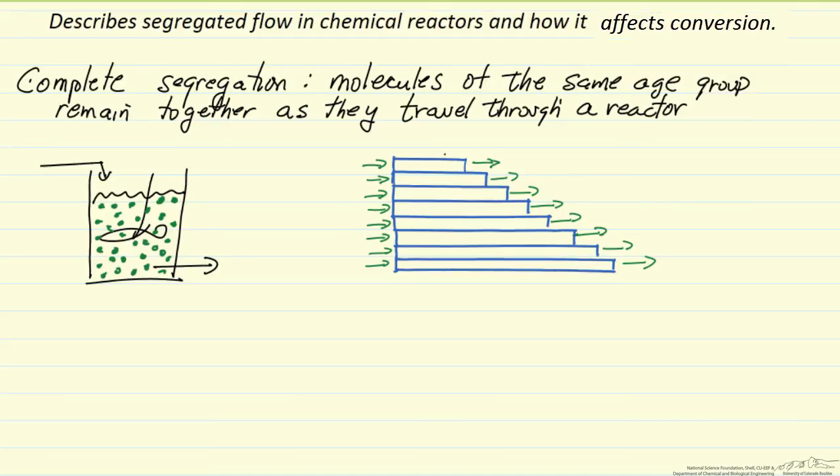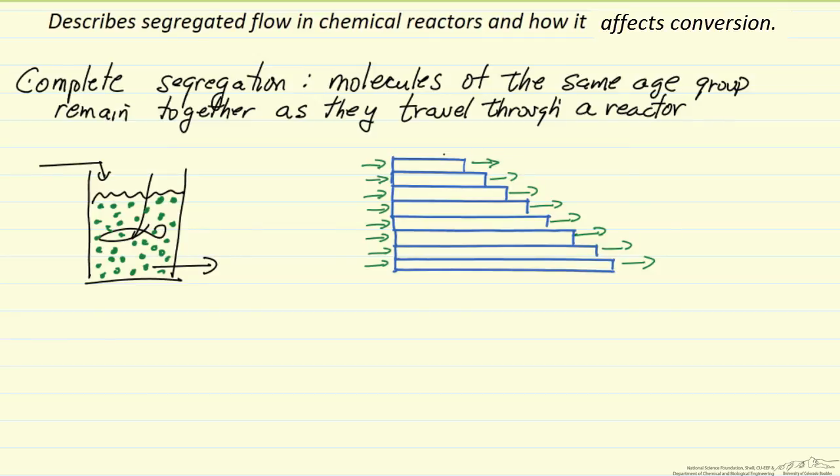In contrast to segregated flow, we have complete mixing, and complete mixing will give us a different conversion, for example, for the same residence time distribution from segregated flow.